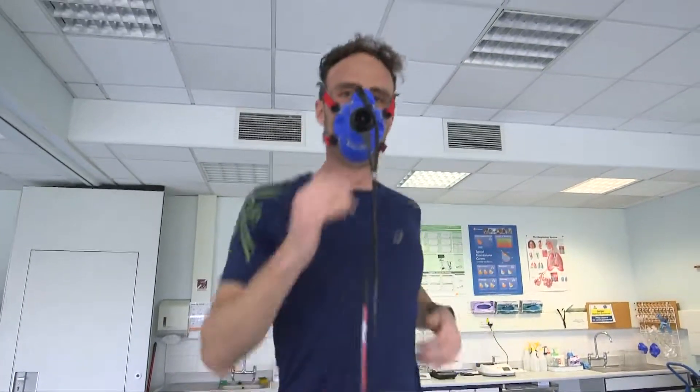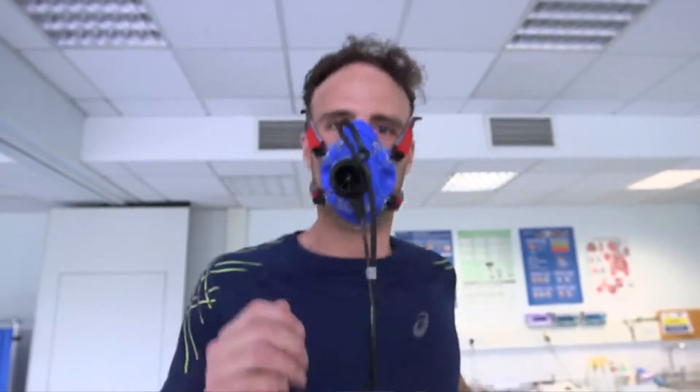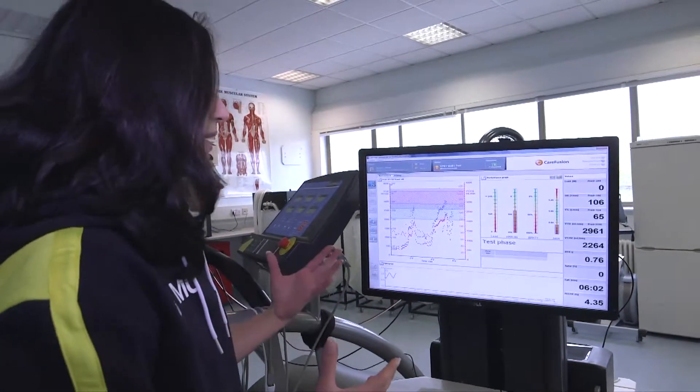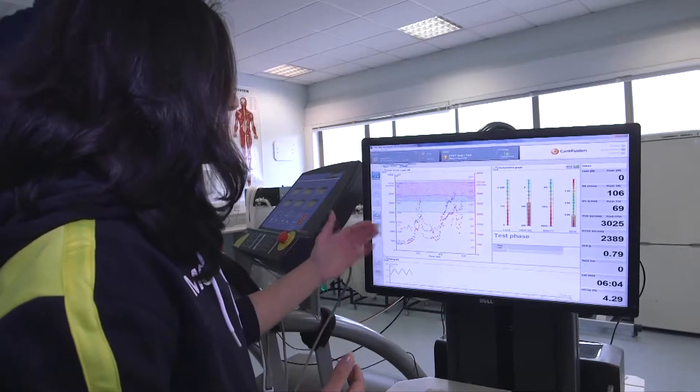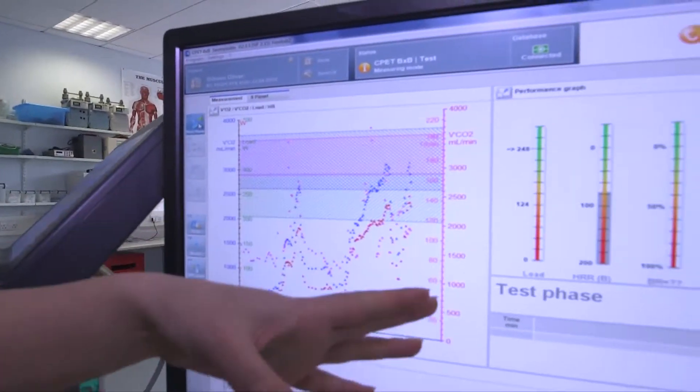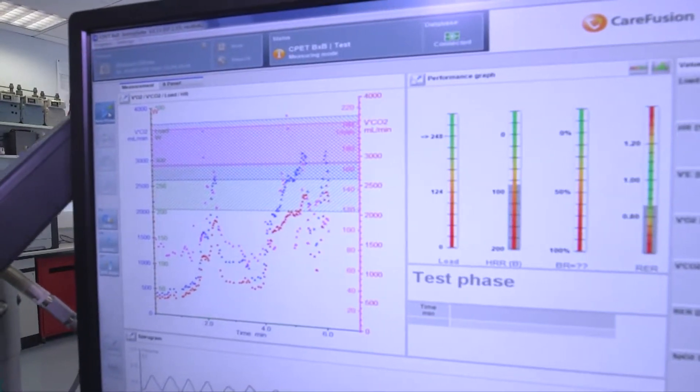Energy expenditure is the total amount of calories used and we can divide those calories into carbohydrates and fats. So if we have a look at the computer, we can see data and on the left side, we see how much oxygen is being used and on the right side, we can see how much carbon dioxide is being expelled.